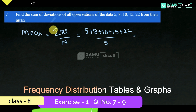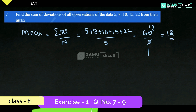5 plus 8 plus 10 plus all, we will get 60. So 60 by 5. What is the mean? 12.